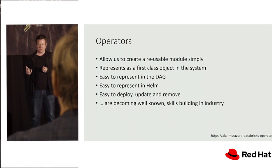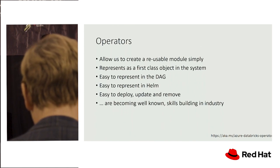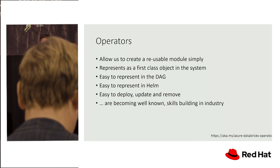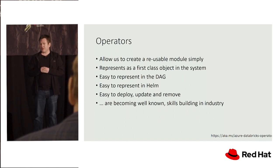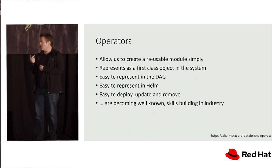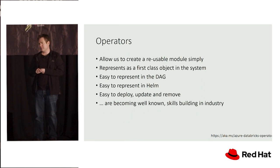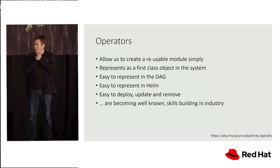They're a first-class object — it's a concept you can get around. It's not like some bash script sitting in a DevOps pipeline. It really creates even an internal community around it. You can easily represent them as a line in a directed acyclical graph or config file. They're also easy to represent in things like Helm or other well-known Kubernetes delivery packages. They're obviously extremely easy to deploy, update, and remove because operators just work using Kubernetes manifests.